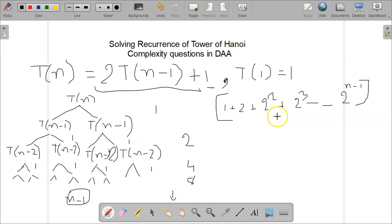This is the series that we have, and here we can apply the simple formula of geometric progression to find the sum of all the terms. The formula is: 2 raised to the power n, minus 1, divided by 2 minus 1, which equals 2^n - 1.